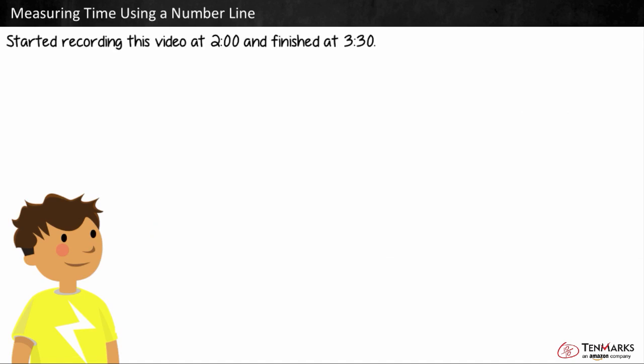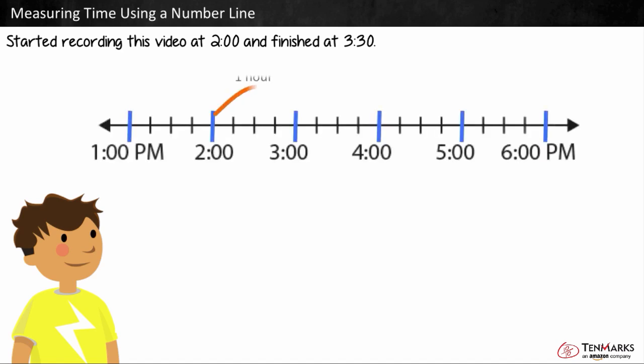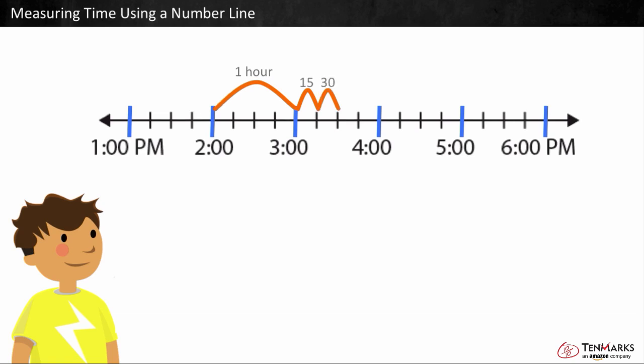If I start recording the video at 2 o'clock and I finish the video at 3:30, how long did it take me to make this video? Let's use this number line. 2 o'clock to 3 o'clock makes 1 hour. 3 o'clock to 3:15 makes 15 minutes. And another 15 minutes makes 30 minutes. So, it took 1 hour and 30 minutes to make this video.